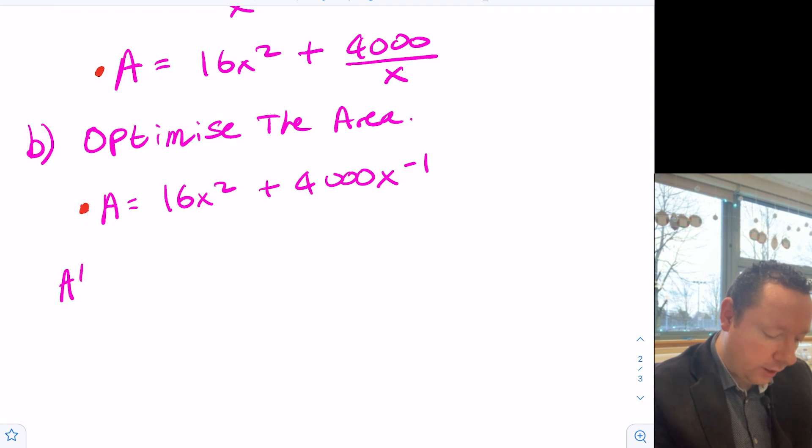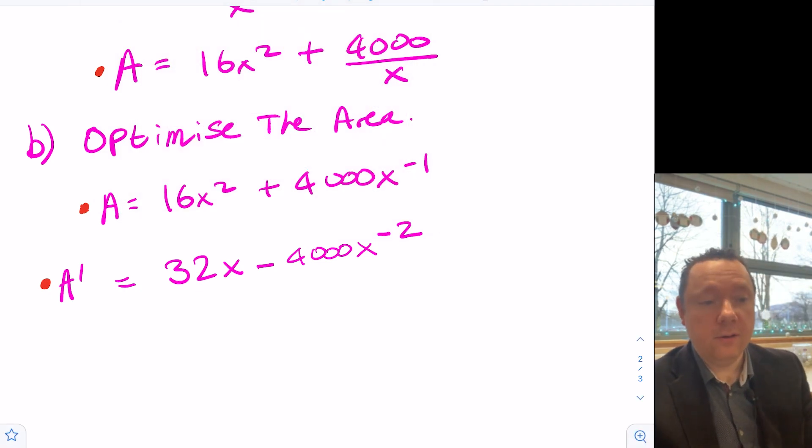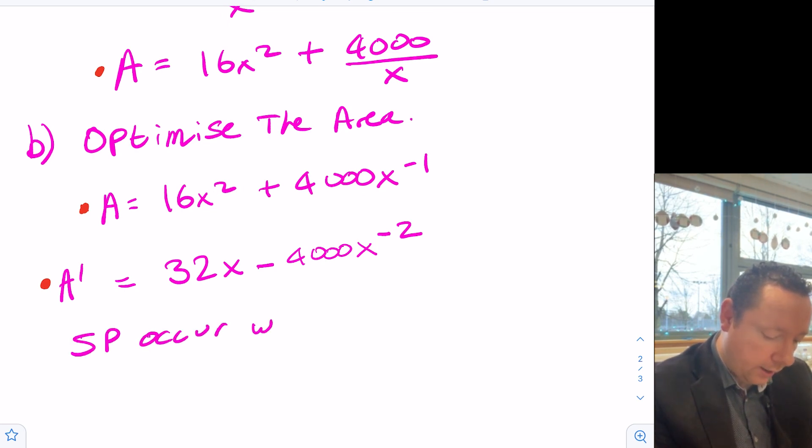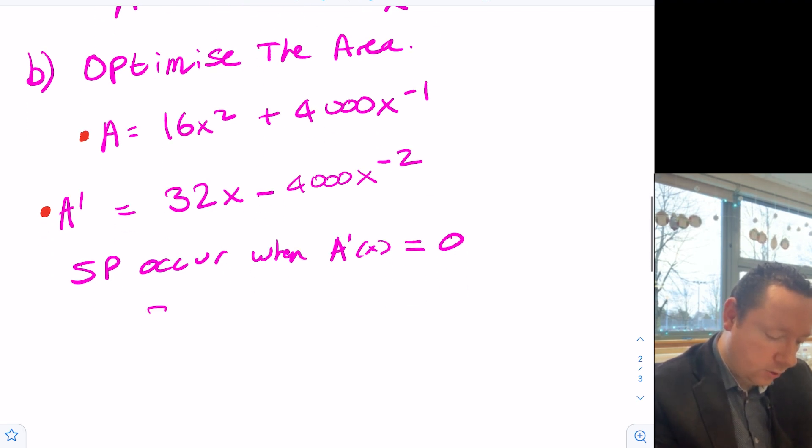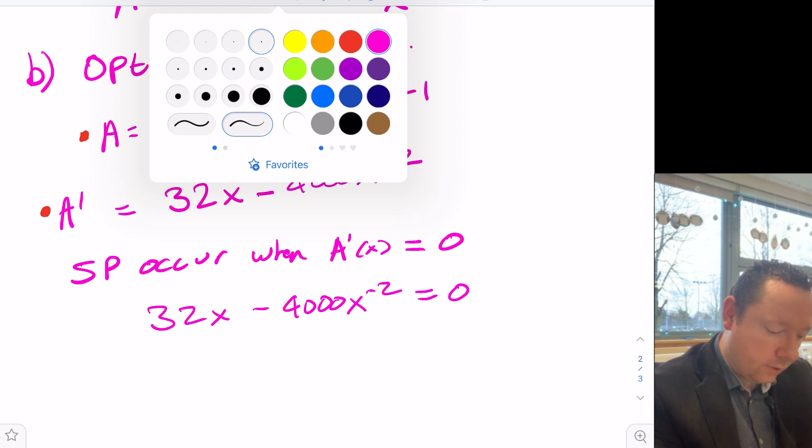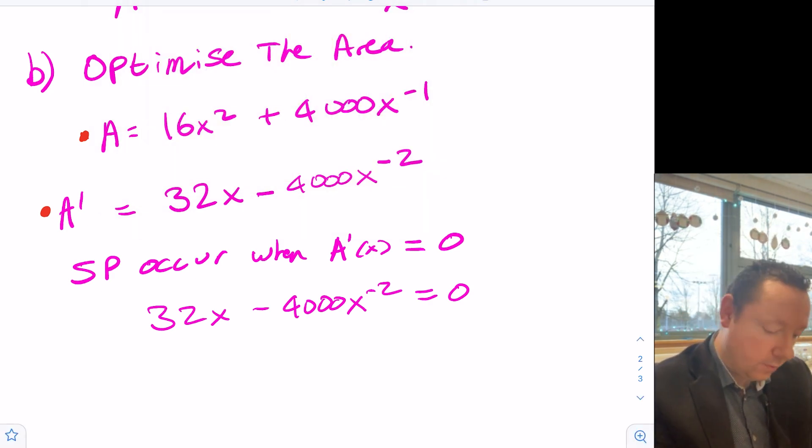We now differentiate it. So A dash or A dash x. Two sixteenths is 32x minus 4,000x to the minus 2. And that's me differentiating it for a mark as well. So 2 marks out of 6 so far. Now if we fix that by making it equal to 0, because we're optimizing. So remember stationary points occur when A dash x equals 0. So we can say 32x minus 4,000x to the minus 2 equals 0. So for realizing we had to do that and find stationary points, we get another mark.